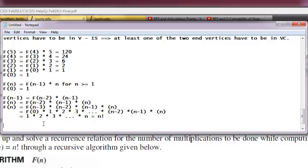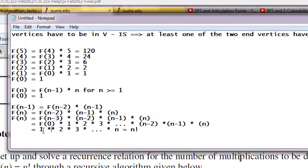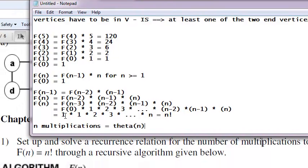So in general if you are computing f(n), you see it is 1 times 1. So to compute n factorial, you are doing theta of n multiplications. So that makes it to be theta of n.